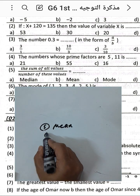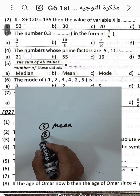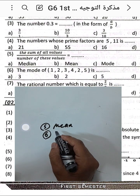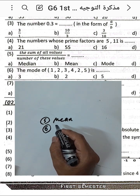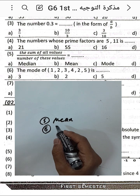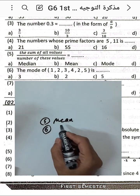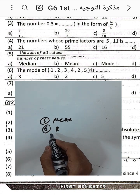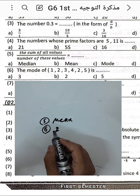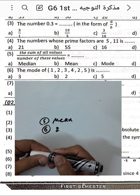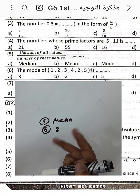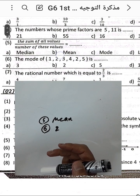Question number six: the mode of all the numbers here is the number that repeats most. We have one, two, three, four, and two repeating twice. Two is repeating twice, so the mode is two.